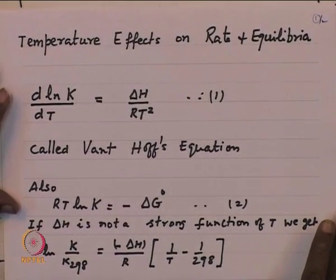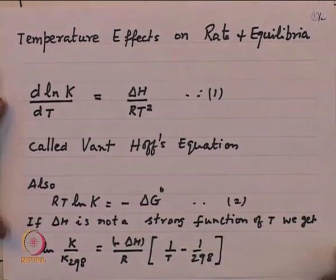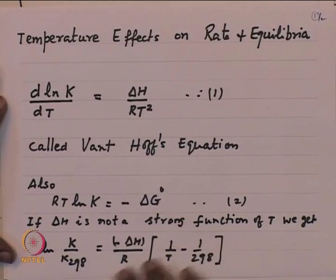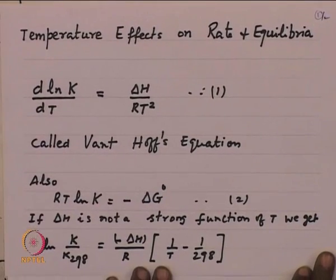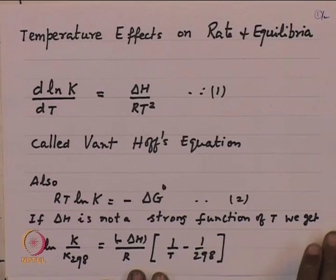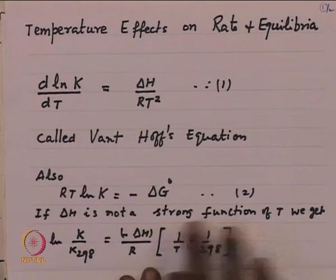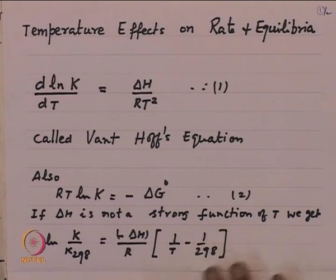Now, if delta H is not a strong function of temperature, we can integrate the equation and get this relationship: ln(K/K₂₉₈) equals minus delta H by R multiplied by this term. In many cases, this is not such a bad assumption — the changes in delta H due to temperature are not very serious. So we can use this relationship: if you know K at a given temperature, you can find K at any other temperature.